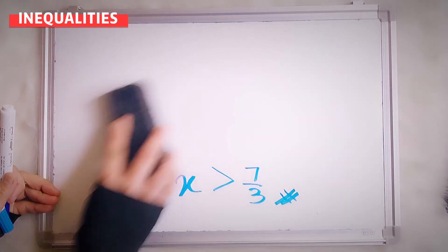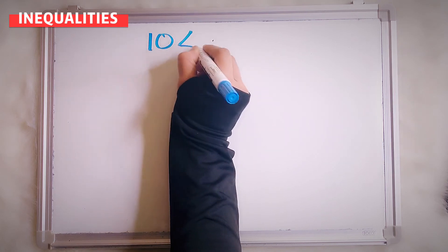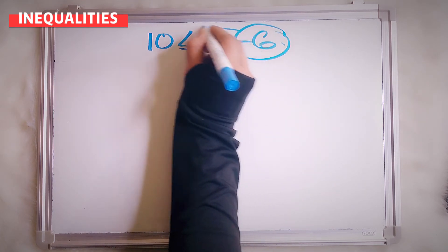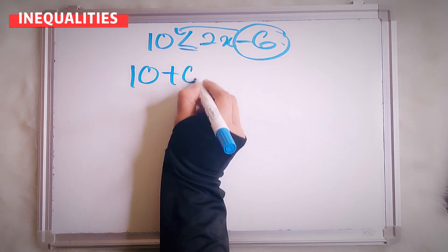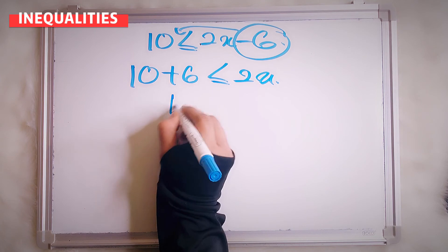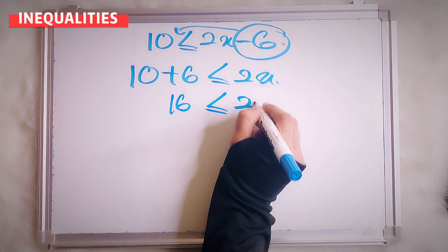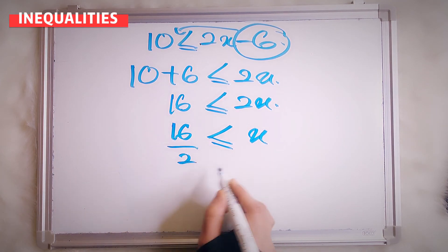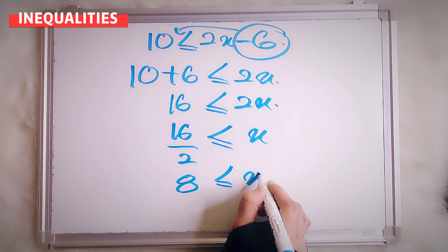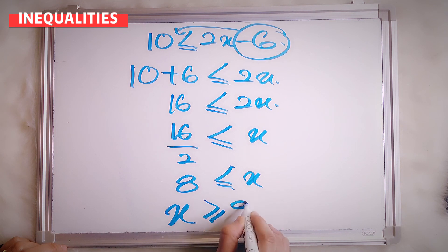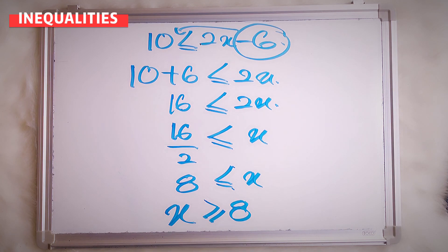Last one. I give you here 10 less than or equal to 2x minus 6. So I want to bring here to this side. So 10 plus 6 is less than or equal to 2x. So 10 plus 6 is 16, less than or equal to 2x. So your x now — 16 divided by 2. So here is 8. You have to change the sign. So your x now — see the open here — x is more than or equal to 8.